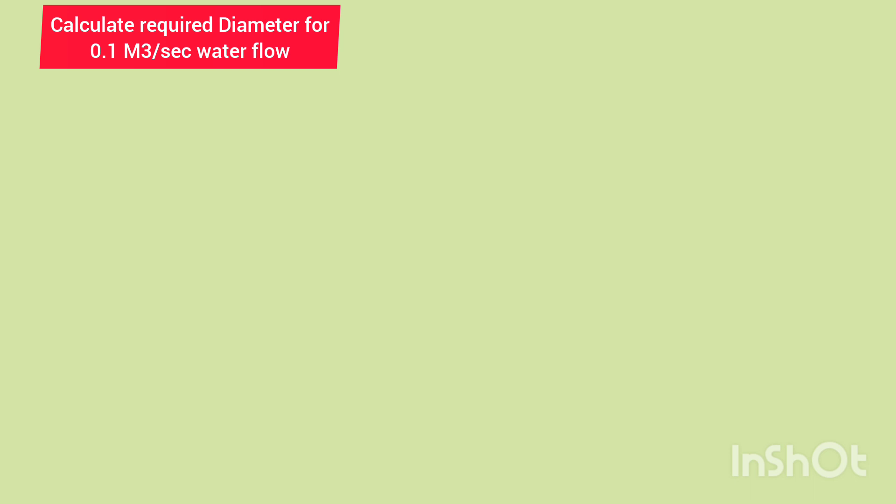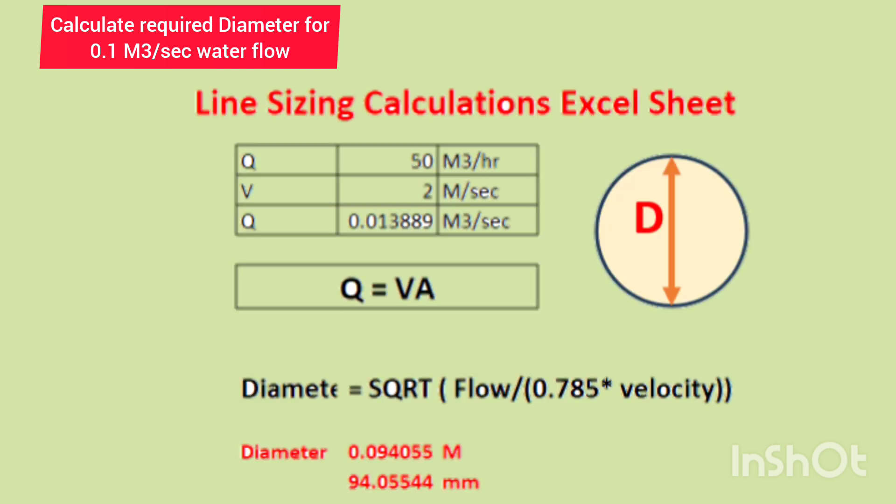Based on the factors which we discussed in this video before, we can consider optimum velocity of 2 meter per second. So by putting 0.1 meter cube per second as flow Q and velocity as 2 meter per second in this diameter calculation formula, the answer in meters is 0.095 meter, in mm it's 94 mm, and so we can consider 4 inch pipe diameter for this flow.